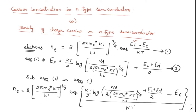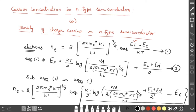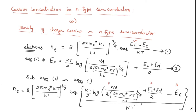Now, in this exponential term, I am going to combine the second term and the third term by taking the LCM. Instead of writing three terms, I will write it as two terms. The KT in the denominator will also be divided through. Just follow me to understand the next step.